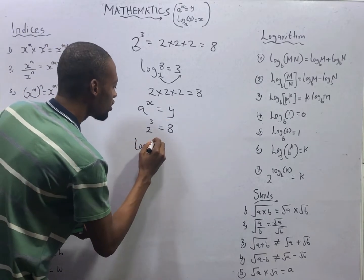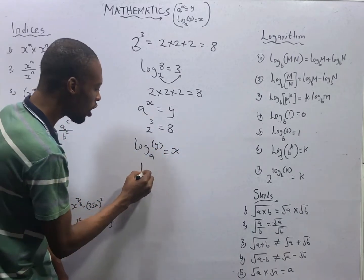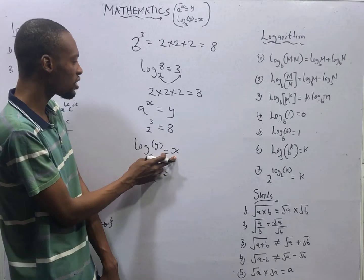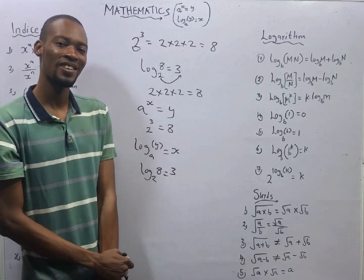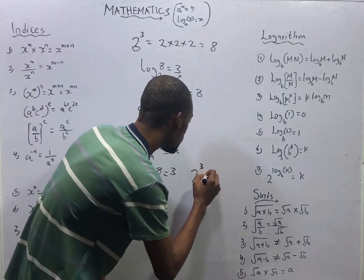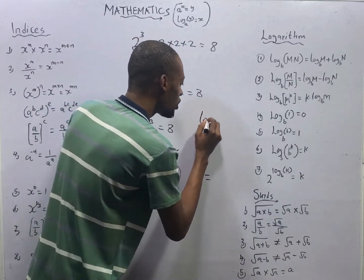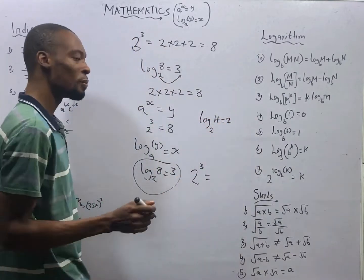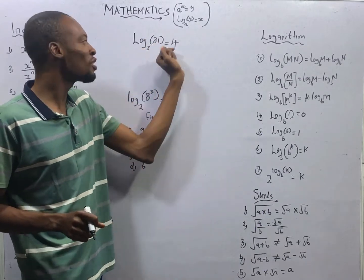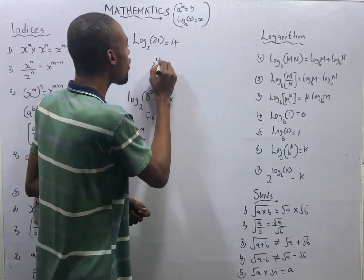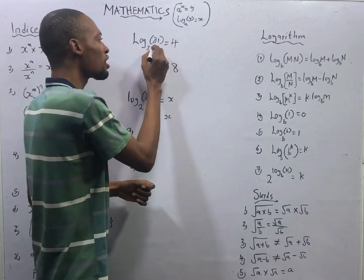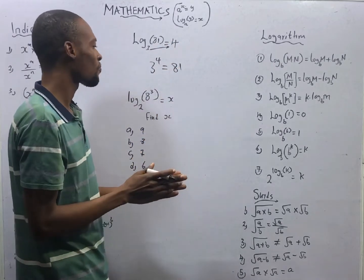From this relationship, if log 8 to base 2 equals 3, it simply means 2 raised to the power of 3. If log 4 to base 2 equals 2, this implies 2 raised to the power of 2 equals 4. Log 81 to base 3 equals 4, which means 3 raised to the power of 4 equals 81. That is how logarithm works.